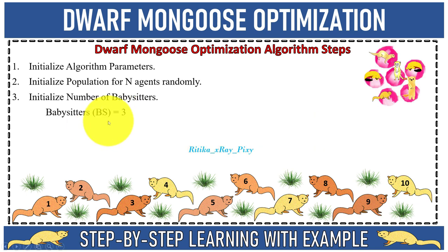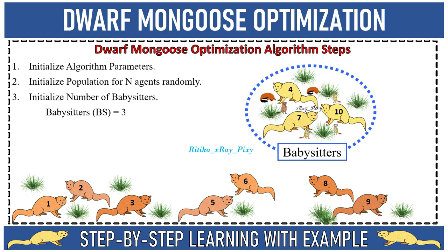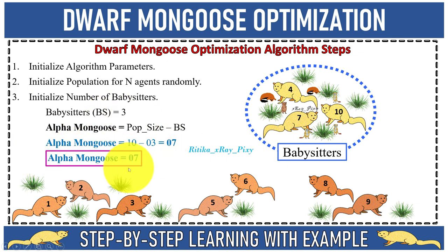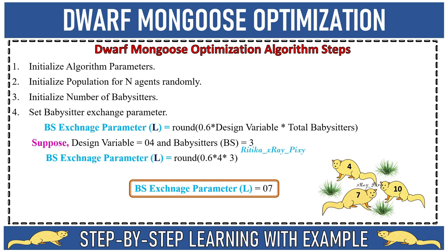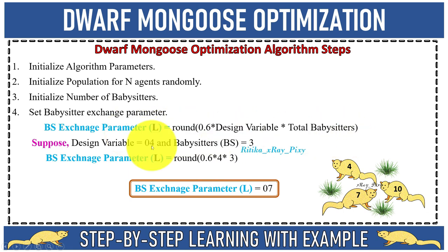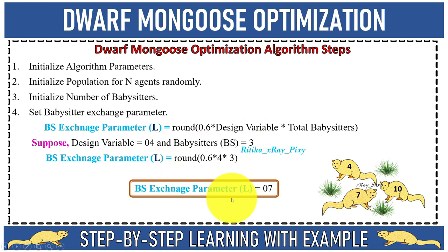Next we select the total number of babysitters who will remain with the young ones when other members are searching for food and new shelter. For example, with 3 babysitters and a total population of 10, we have 7 members in the alpha group. We then set the babysitter exchange parameter l. For example, with 4 design variables and 3 babysitters, the value of l is calculated as 7.